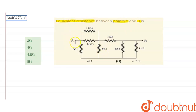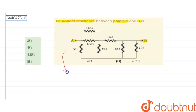In this question we have been asked for the equivalent resistance between point A and B as shown in the figure. So this is a circuit and on a first look it is looking very complicated, so let's resolve it in a simpler form. We can find it in some tricky way to solve it.